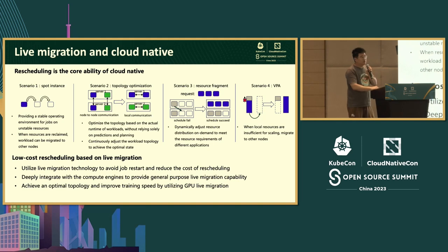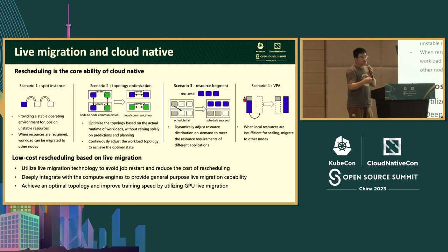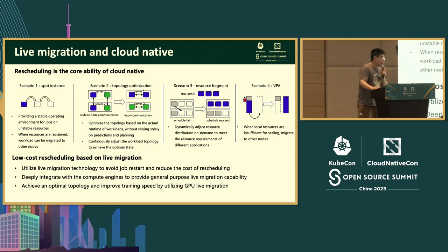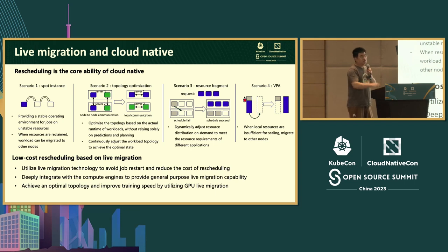Live migration provides a low-overhead rescheduling method. Even big data applications with full fault tolerance cannot accept being frequently killed without reason. With live migration, all the rescheduling strategies above can be executed with low overhead, and upper-layer applications and engines can customize flexible live migration policies. At Tencent we are working with the big data engine teams to deeply integrate live migration capability with big data engines, providing it as a standard service so users can enjoy lower costs while retaining flexible strategies.